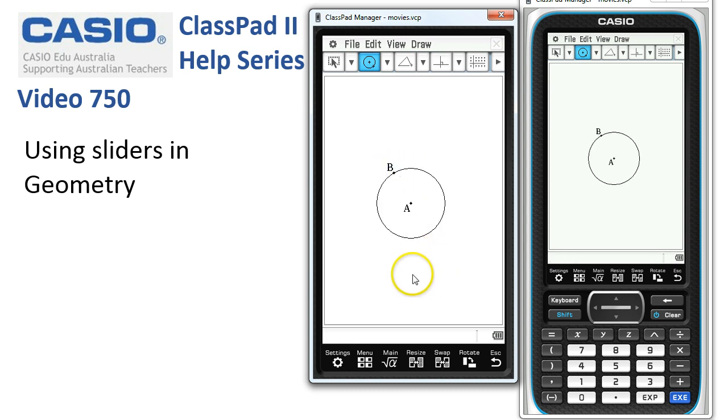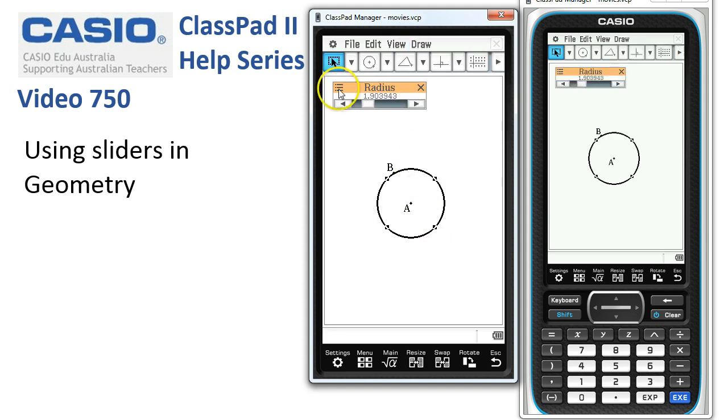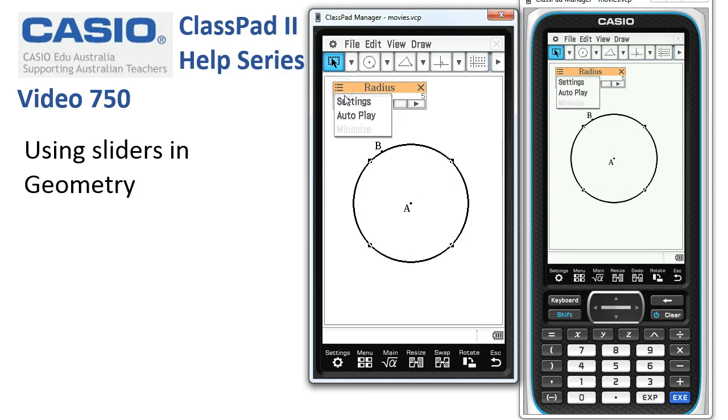And if I now go back and choose the select tool and tap onto the circle to select it, tap onto draw slider, the only option now is the radius. And again let's go straight to an autoplay here to see the radius of our circle changing from 1 to 5.